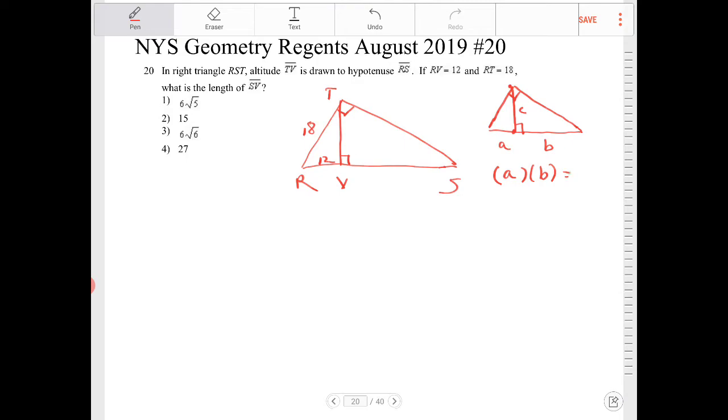will always equal to the altitude squared. And the value of C there, the length of the altitude, we refer to that as the geometric mean of the two numbers A and B.